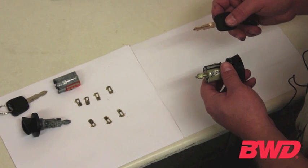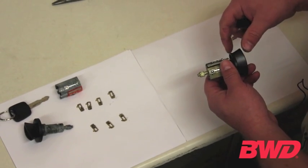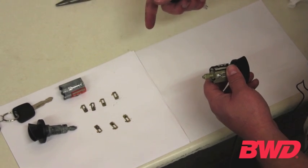Now, in order to recode the lock cylinder to use the previous key in the brand new lock cylinder, we're going to replace the components inside the lock cylinder.